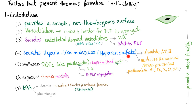The endothelium also secretes heparin-like molecules, such as heparin sulfate, which stimulates antithrombin 3 — the topic of today's video — and neutralizes the activated serine proteases, such as prothrombin and all of that. It also synthesizes prostaglandin I2, also known as prostacyclin, which keeps the blood flowing by vasodilation and decreased platelet aggregation.